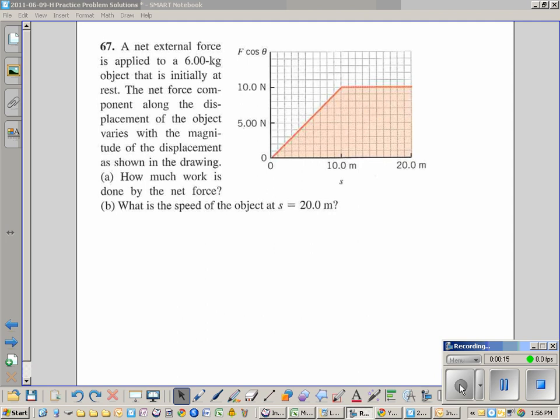So how much work is done by the net force, and then based on that, what's its speed going to be at S? Here we use S for displacement sometimes, just randomly. 20 meters. What is going on with that thing?